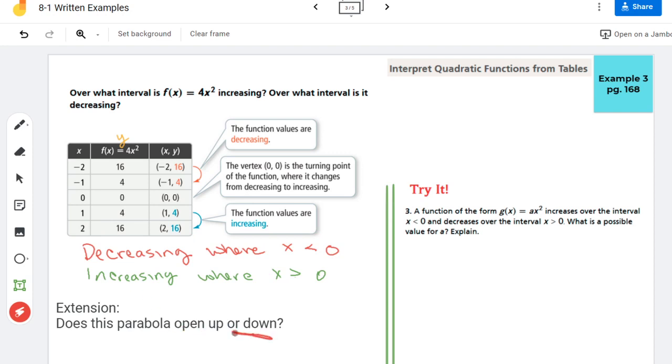Now you might be wondering does this graph open up or down? Looking from a table viewpoint, I could draw a graph and I could draw those points. Negative 2, 16 is up here. Negative 1, 4 is down here. 0, 0, 1, 4, 2, 16. So you could see that this opens up.